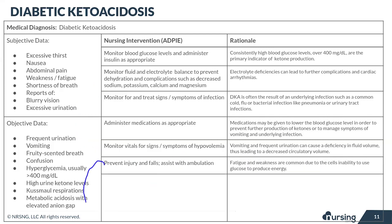Moving on to our last two interventions — patient safety and patient education. For patient safety, we really need to prevent injuries and falls by assisting with ambulation and making sure the patient's environment is safe. Remember, these patients are fatigued and weak with a lack of energy, so it's really important that we assist them and make sure that doesn't cause any problems.